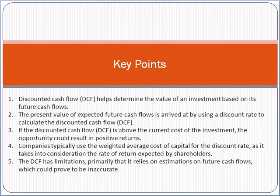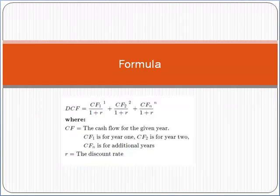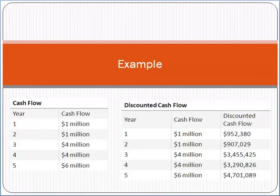The main purpose of discounted cash flow is that it tells you the projected value of your investment after passing a few years, giving you insight into whether you should go for the investment or not. It helps you make decisions about the future. The formula of discounted cash flow uses CF, which stands for cash flow for the given year, and r, which is the discount rate.